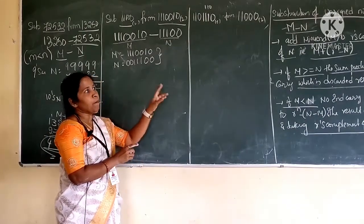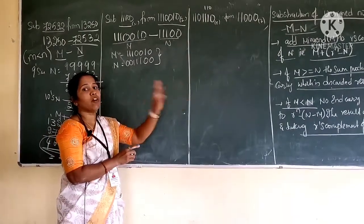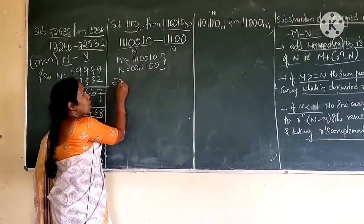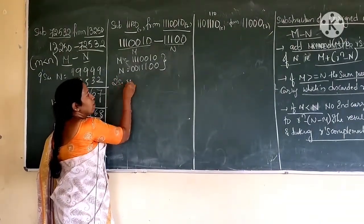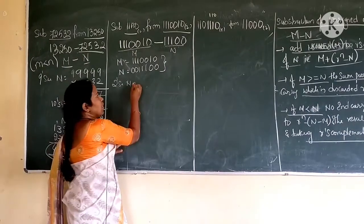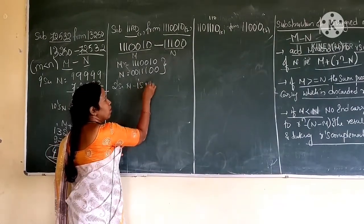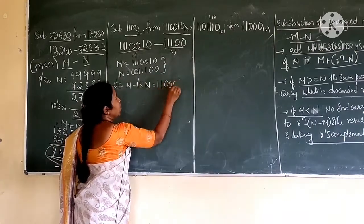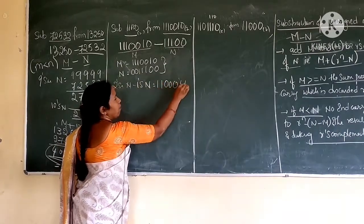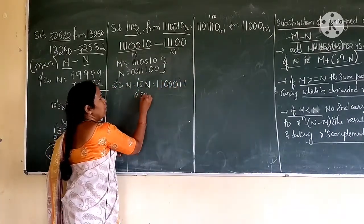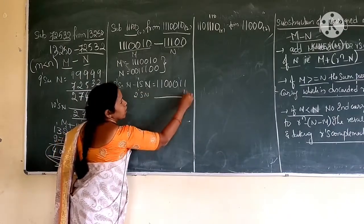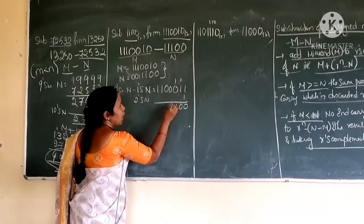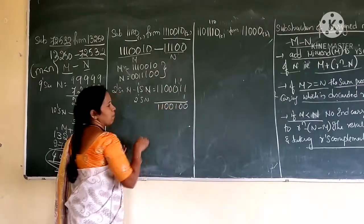Now the number of bits in both m and n are equal. First step: adding m plus r's complement of n, which means the 2's complement of n. First I should find out the 1's complement of n, which gives 1100011. Then the 2's complement of n is adding 1: 1100011 plus 1 gives 1100100.